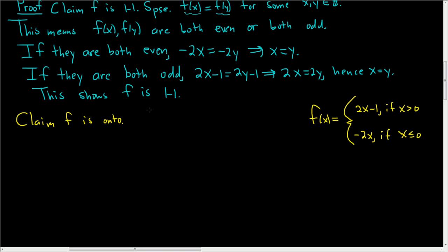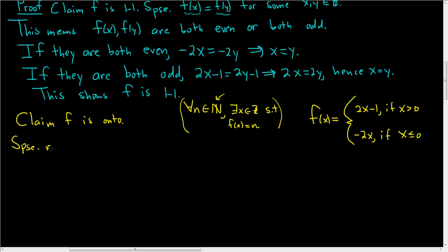To show it's onto, we have to show that for all little n in the codomain, there exists an x in the domain such that f takes x to n. We have to start by taking some n in the set of natural numbers. Suppose little n is a natural number. We'll take cases: the case where little n is even and the case where little n is odd.